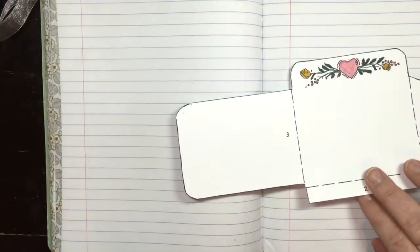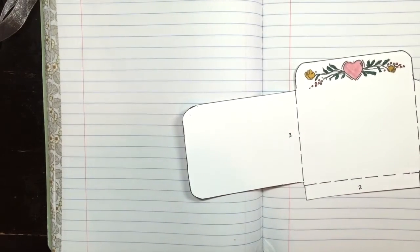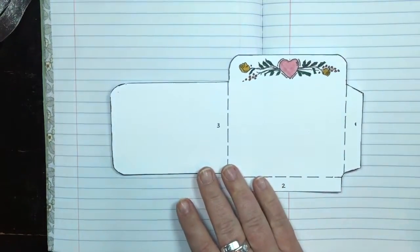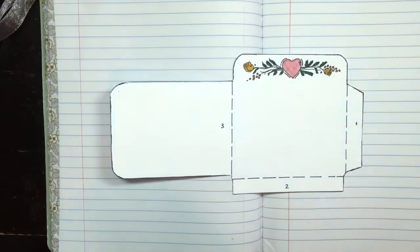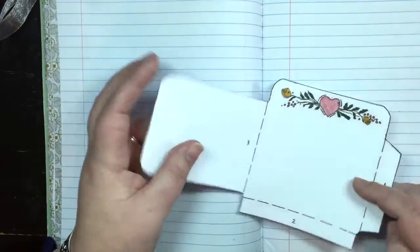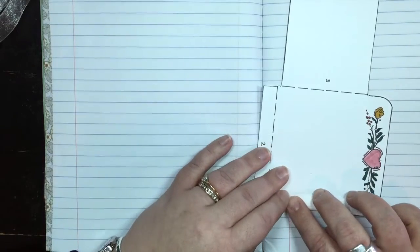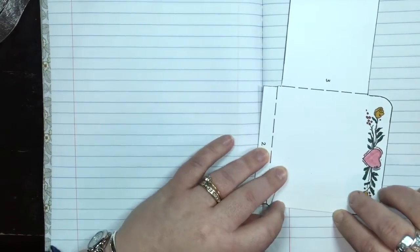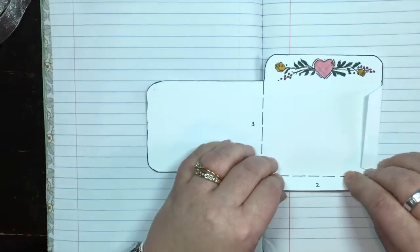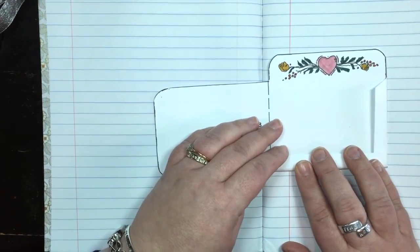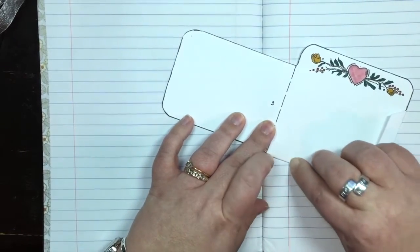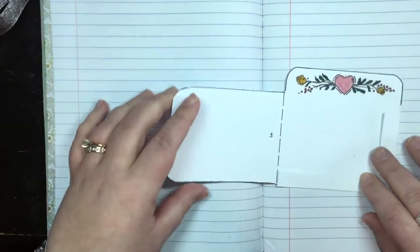Now, if we can go on to the pocket template. Breanne, you'll see there's numbers on the tabs. So let's identify them for the camera. Number one is the first tab you're going to fold over and you're going to fold it the other direction. I'm folding it in? Yes.